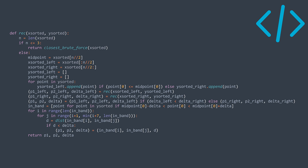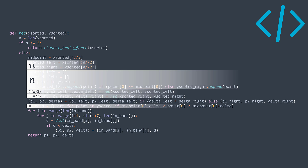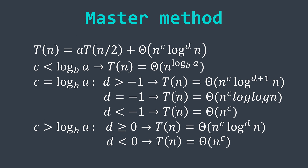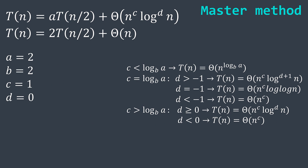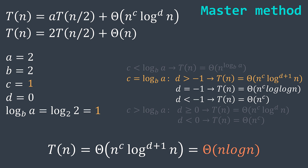For time complexity, in the recursive function we have O(n) to split x_sorted, O(n) to split y_sorted, T(n/2) for each recursive call, O(n) to find band points, and 6·n for the outer and inner loops. This gives T(n) = 2·T(n/2) + Θ(n). Applying the master theorem with A=2, B=2, C=1, D=0: log_B(A) = log₂(2) = 1 = C, so we're in the second case with D > −1, giving T(n) = Θ(n^C · log^(D+1) n) = Θ(n log n).